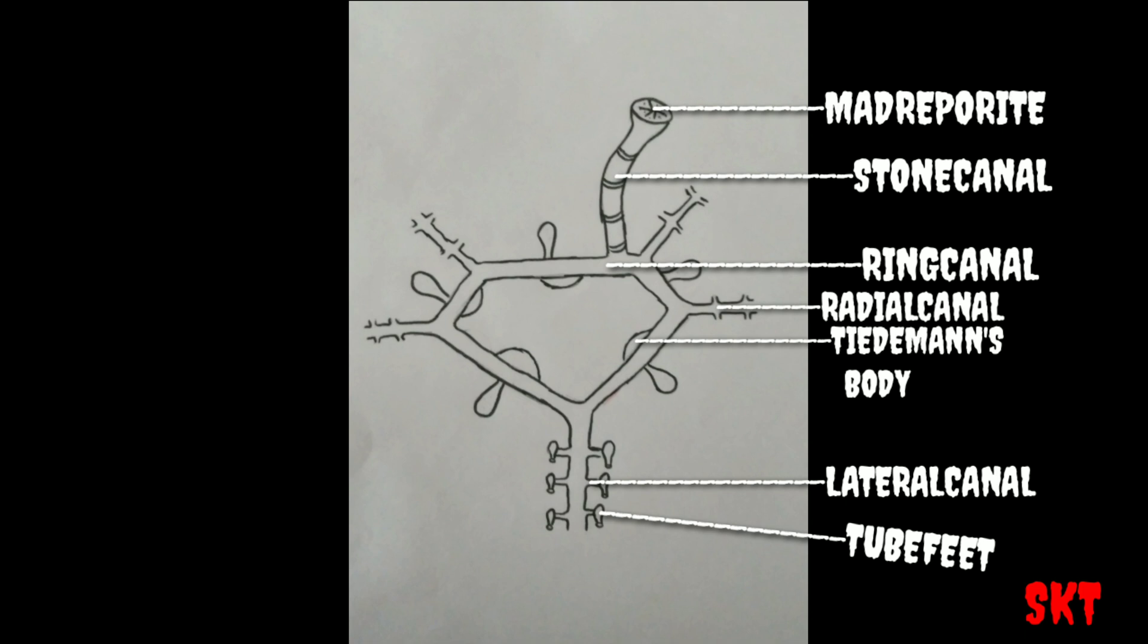The ring canal also gives out externally thin-walled, long-necked structures called polian vesicles. The function of these is to regulate the pressure inside the system so the water moves smoothly. These are also helpful in manufacture of amoebocytes.